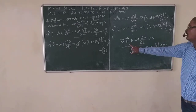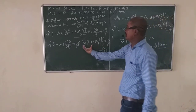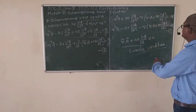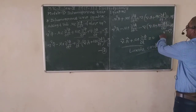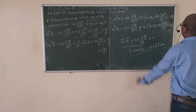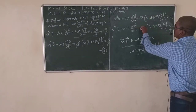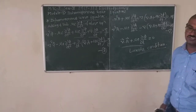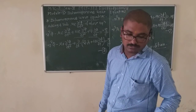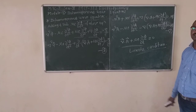Applying the Lorentz condition — del dot A plus mu*epsilon*(d phi/dt) equals 0 — to equations 7 and 8, the bracketed terms will be cancelled or neglected. Substituting this into both equations simplifies them significantly, with the coupled terms dropping out.